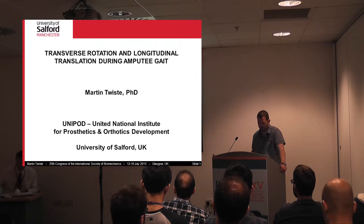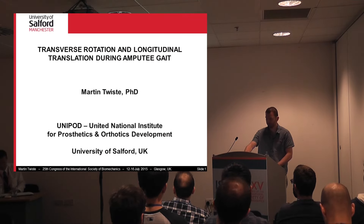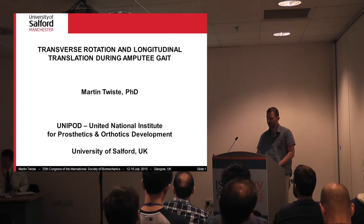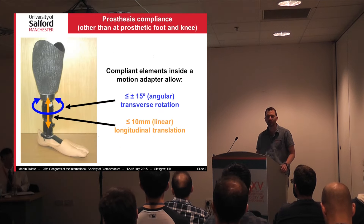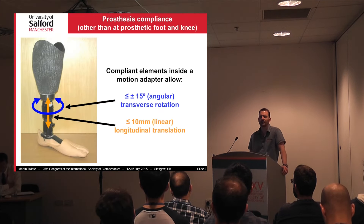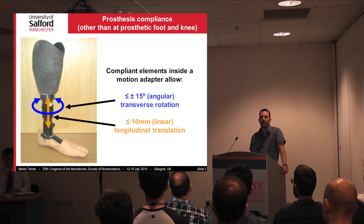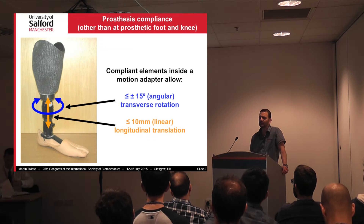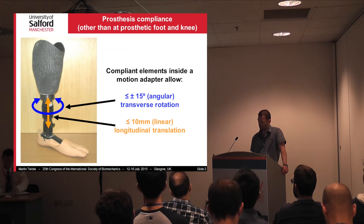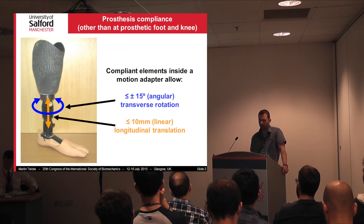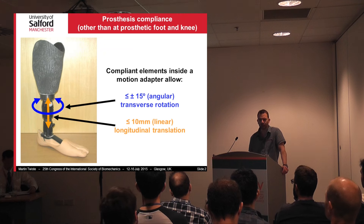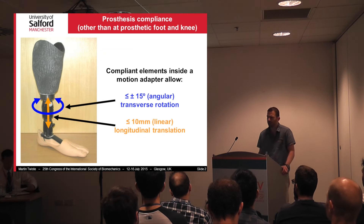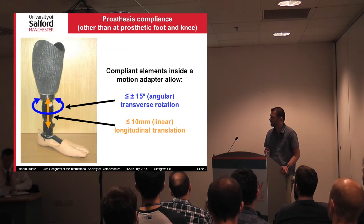Thanks Tony. Hi everybody. I'll carry on talking about something that Jamie started talking about — the rigidity versus compliance in prostheses, what sort of difference there is between the two aspects, and what it does to the amputee. Let's generally talk about how prostheses are made up.